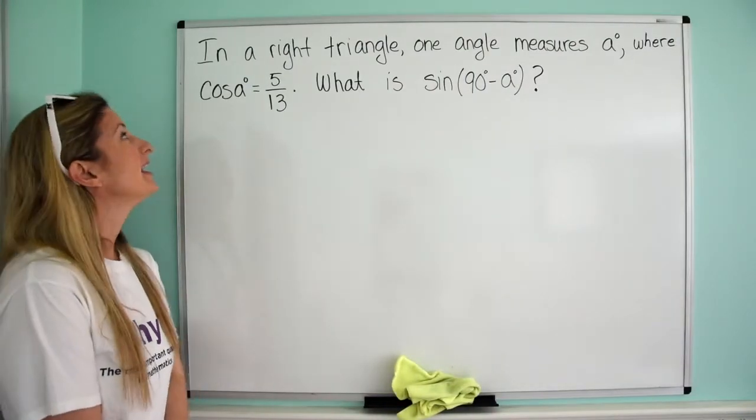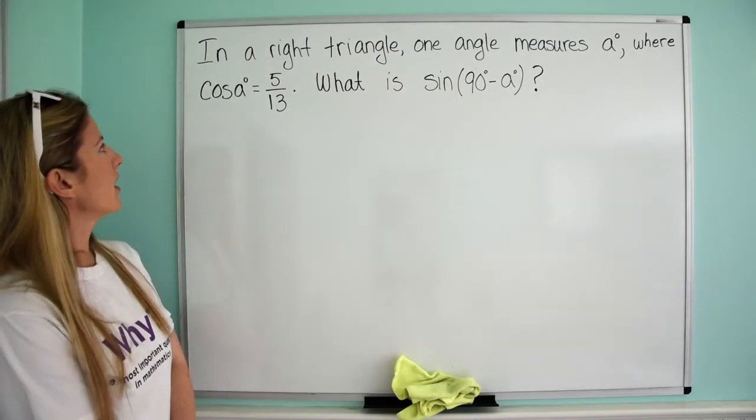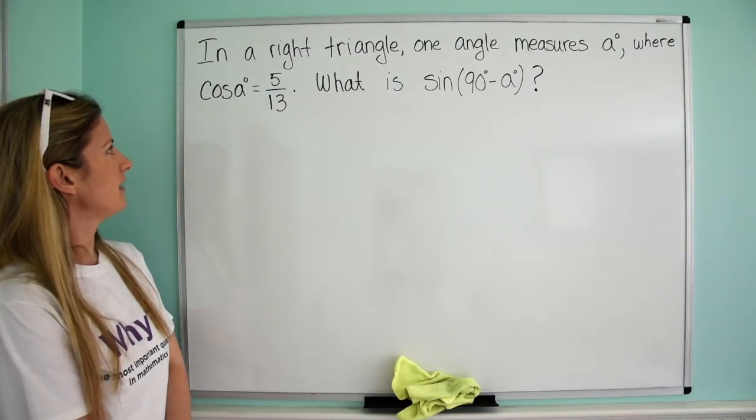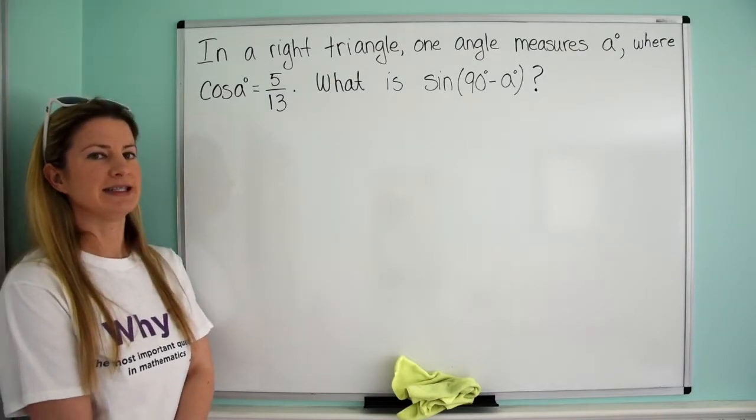Let's try this problem. In a right triangle, one angle measures a degrees where the cosine of a is 5 over 13. What is the sine of 90 minus a?